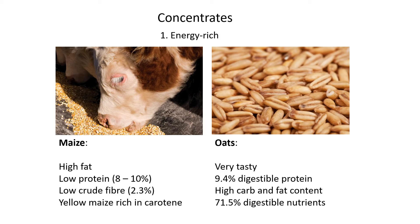Oats do have some protein at around 9.4%, which is very low. It has a high carbohydrate and fat content and 71.5% digestible nutrients. This digestible nutrients value refers to all nutrients — carbs, fats, proteins combined — so oats do have a lot of benefit for the animal, and generally animals get most of the nutrients they need from oats.